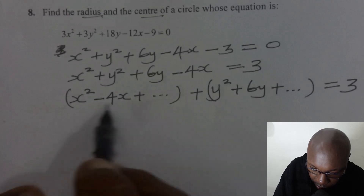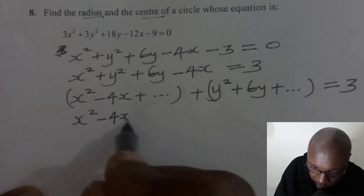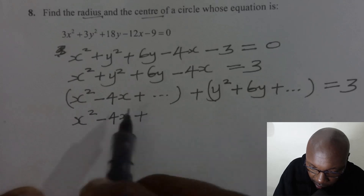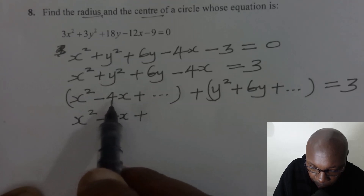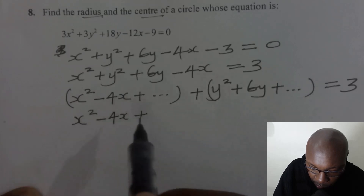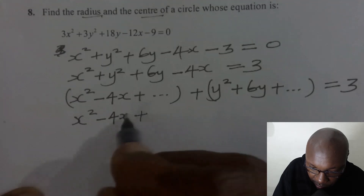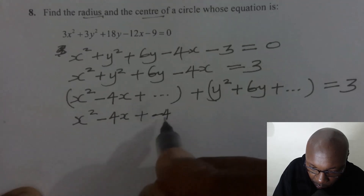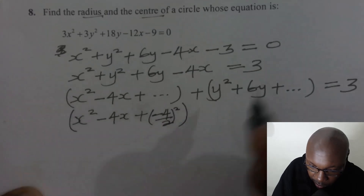To complete this square for x squared minus 4x, we get half the coefficient of x. The coefficient of x is negative 4. So negative 4 divided by 2, then you square that. Negative 4 divided by 2 gives negative 2, so negative 2 squared. We square that — that is how you get the value 4.